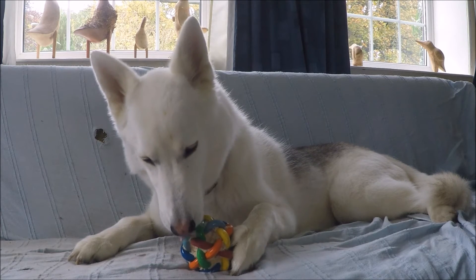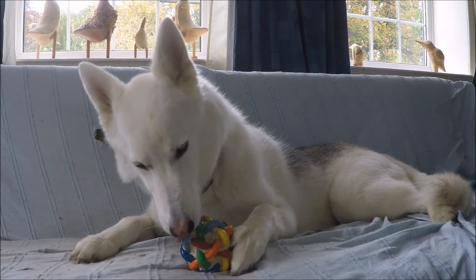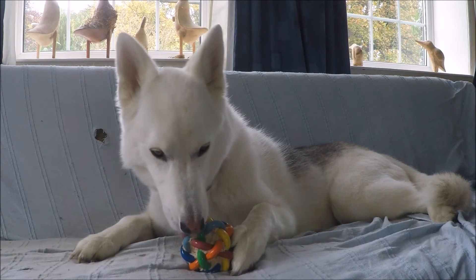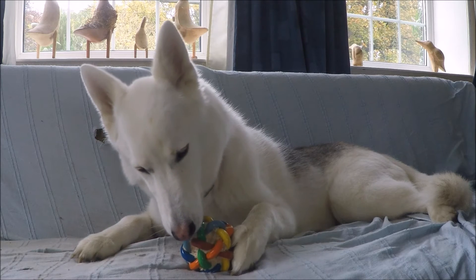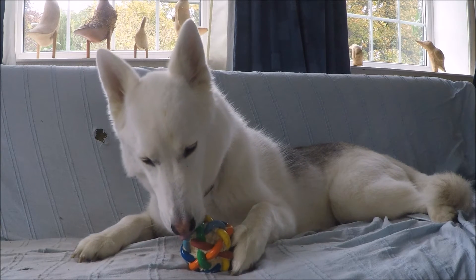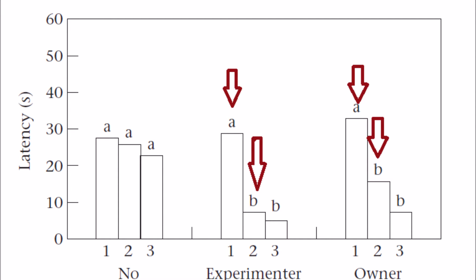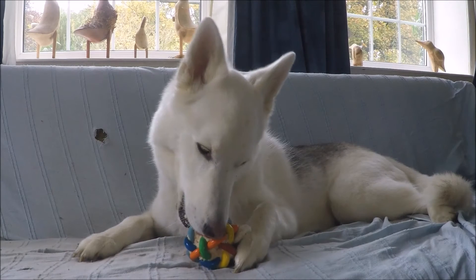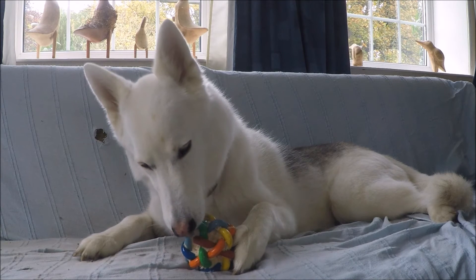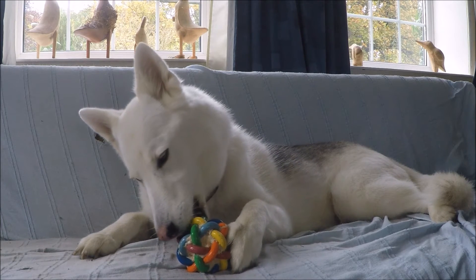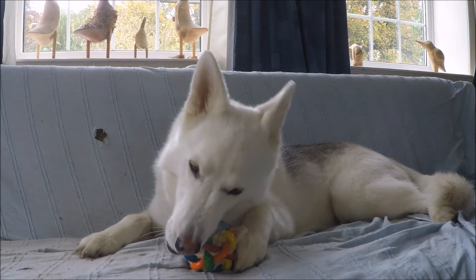Next we'll look at a study by Pongras et al, who investigated if dogs could learn from a human demonstration. Food or a toy was placed behind a V-shaped fence and the dog had to detour around the fence, moving away from the reward in order to get it. All dogs were given one attempt, then half saw a person carry the reward around the fence. Dogs who saw the human demo improved much more in their second attempt, regardless of whether the demonstrator was their owner or a stranger. However, dogs didn't always follow the path of the demonstrator, ruling out true imitation but possibly indicating emulation.